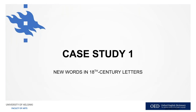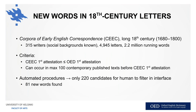Let's move on to the first case study: new words in 18th century letters. We are using the long 18th century from our corpus, about 1680 to 1800. We've got more than 300 writers where we know their social backgrounds, about 5,000 letters and 2 million running words. The criterion for a new word was that the first attestation in our corpus must be earlier than or the same as the first attestation in the OED, and that the word could occur in no more than 100 contemporary published texts before the first attestation in our corpus. We ended up with 220 candidates and found 81 new words.